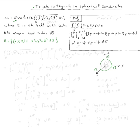So our f(x, y, z) happens to be this function — √(x² + y² + z²). This is f(x, y, z).